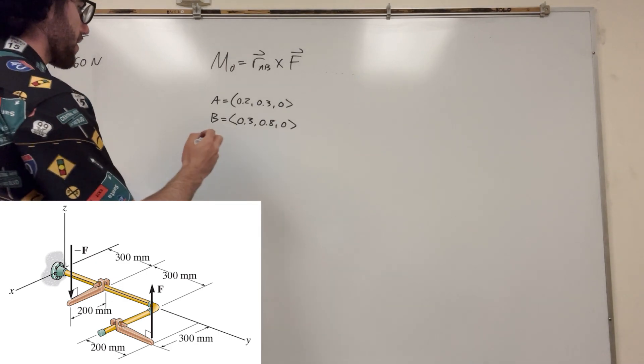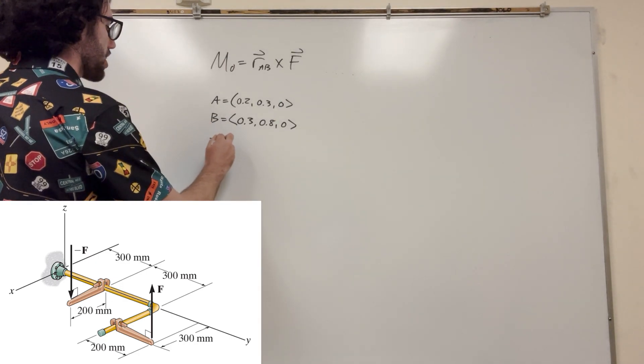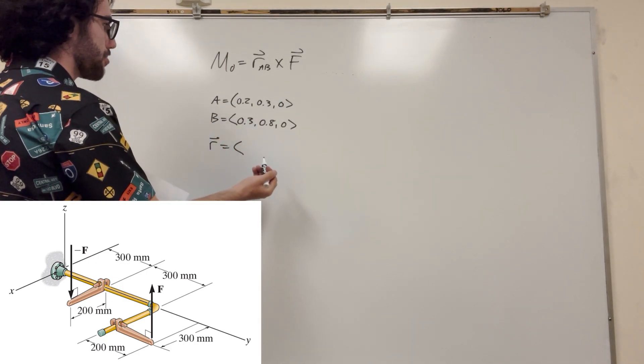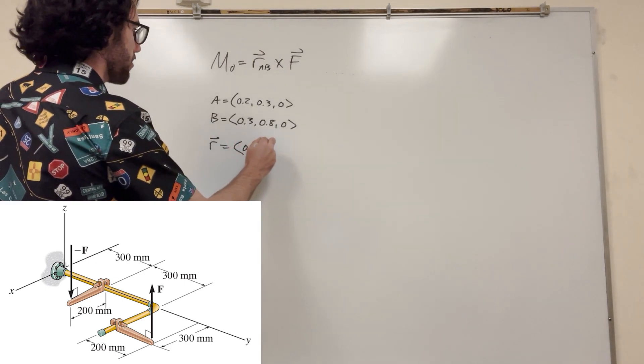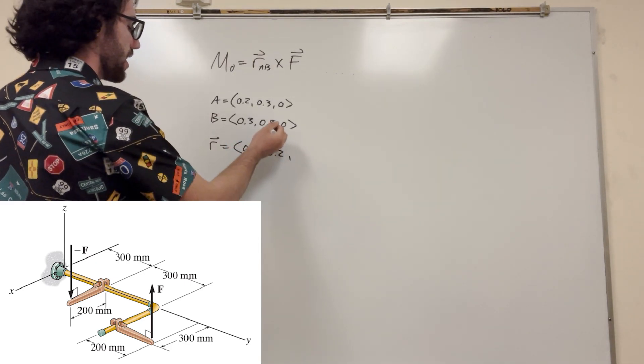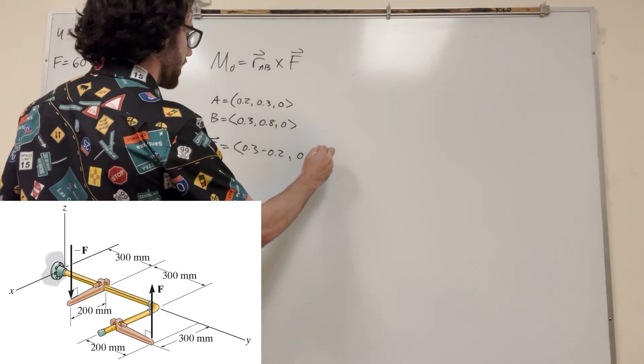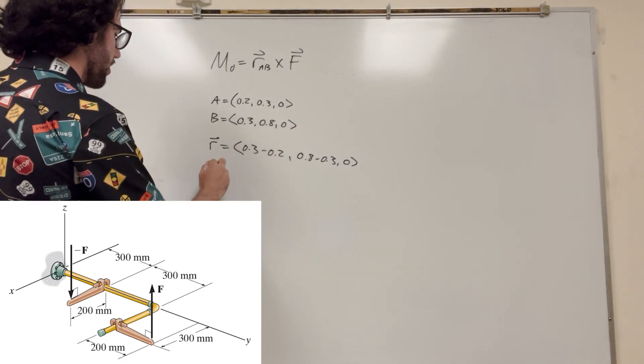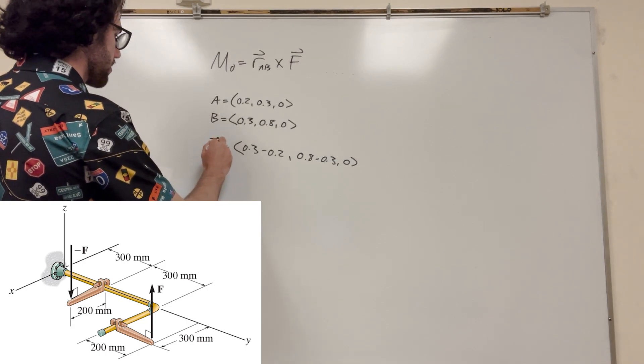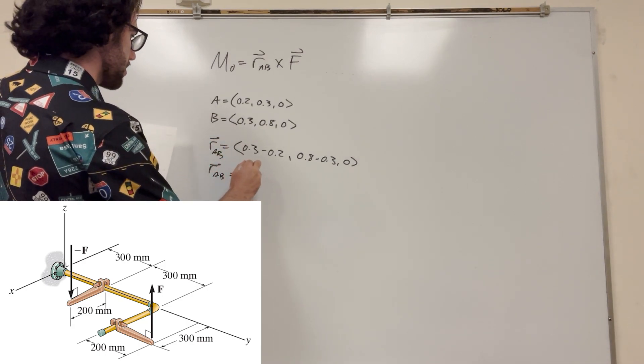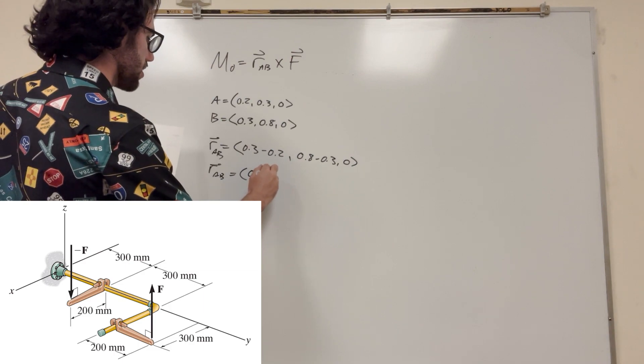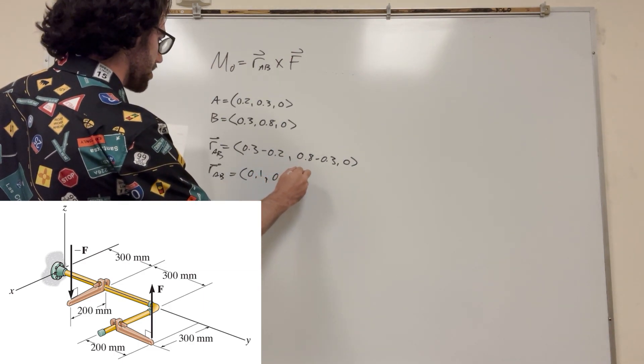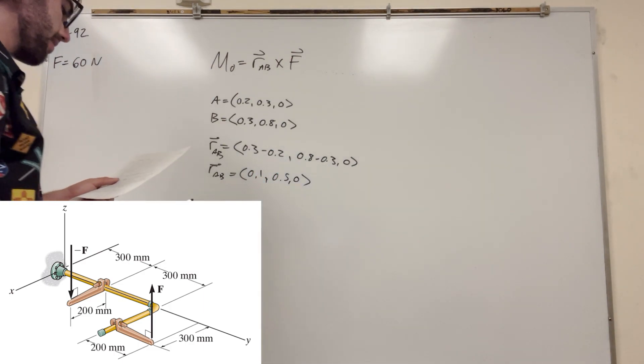So if we want a position vector from A to B, of course, it's just going to be tip minus tail. So the tip is B, so it's going to be 0.3 minus 0.2. And this is going to be 0.8 minus 0.3, 0 minus 0. So, of course, RAB is equal to 0.1, 0.5, 0. That makes sense.